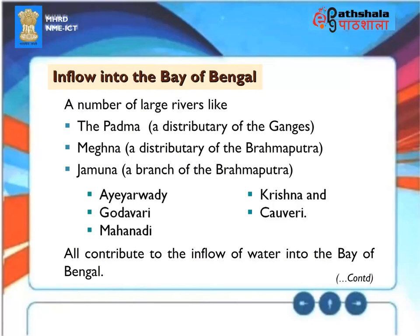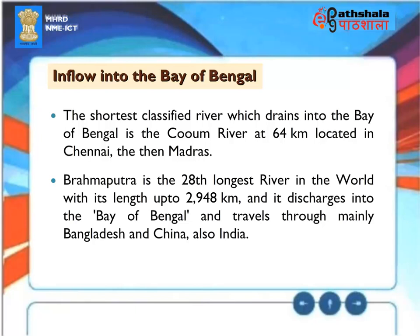Inflow into the Bay of Bengal. A number of large rivers like the Padma, a distributory of the Ganges, Meghna, a distributory of the Brahmaputra, Jamuna, a branch of the Brahmaputra, Ayayarwadi, Godavari, Mahanadi, Krishna and Kaveri all contribute to the inflow of water into the Bay of Bengal. The shortest classified river which drains into the Bay of Bengal is the Koovam River at 64 kilometers, located in Chennai, the then Madras. Brahmaputra is the 28th longest river in the world with its length up to 2,948 kilometers and it discharges into the Bay of Bengal, traveling through mainly Bangladesh and China, also India.